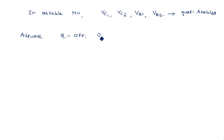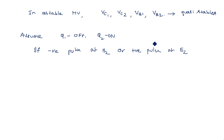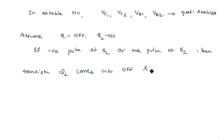Assume Q1 is in off state and Q2 is in on state. Applying a negative pulse at base 2 or a positive pulse at emitter 2 — either one — breaks that junction, and transistor Q2 comes into off state. This results in a change in the period of oscillations.